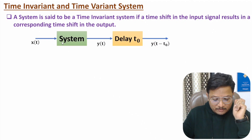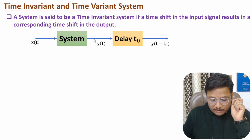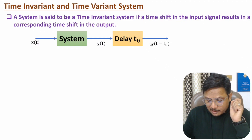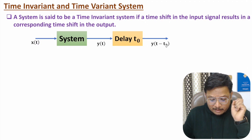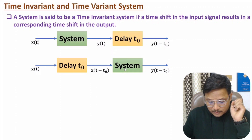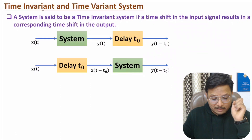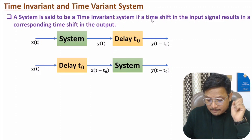Here we have a system. If we give input x(t), it produces output y(t). If we apply a delay t₀, the output should be y(t − t₀). In the second combination, if we first delay the input to get x(t − t₀) and pass it through the system, it should also produce y(t − t₀). If both outputs are the same, then the given system is a time invariant system.